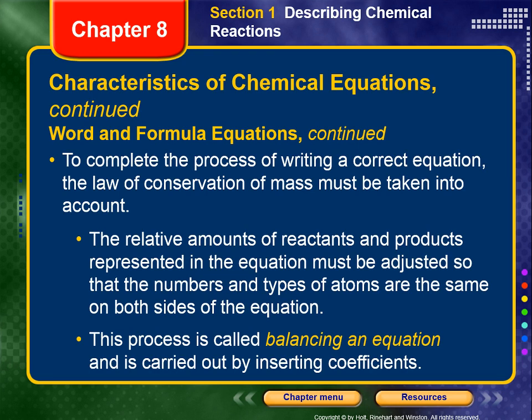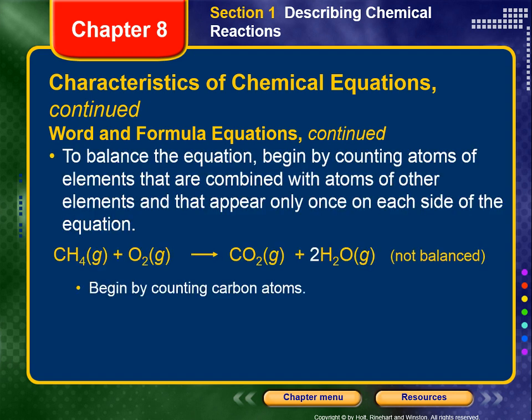To complete the process of writing a correct equation, the law of conservation of mass must be taken into account — because it's a law, it is always shown to be true. The relative amounts of reactants and products represented in the equation must be adjusted so that the numbers and types of atoms are the same on both sides. This process is called balancing an equation and is carried out by inserting coefficients — not changing subscripts on formulas, which would change the reaction into representing a different reaction.